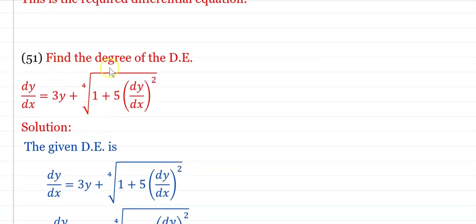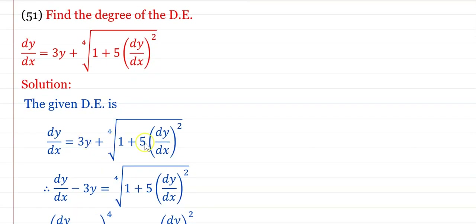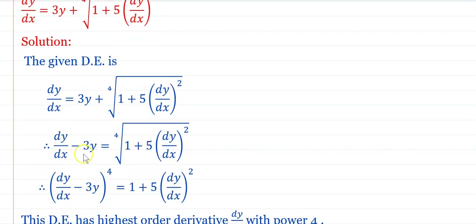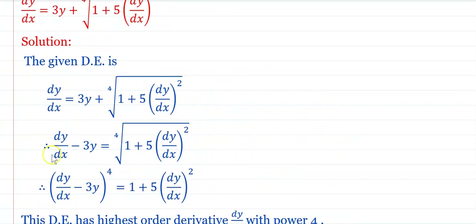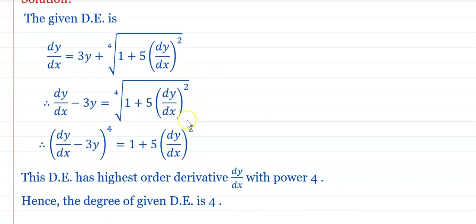Find the degree of dy/dx = 3y + ⁴√(1 + 5(dy/dx)²). Rewriting: dy/dx − 3y = ⁴√(1 + 5(dy/dx)²). Taking the fourth power: (dy/dx − 3y)⁴ = 1 + 5(dy/dx)². The highest order derivative is dy/dx with power 4. Therefore the degree of the given differential equation is 4.